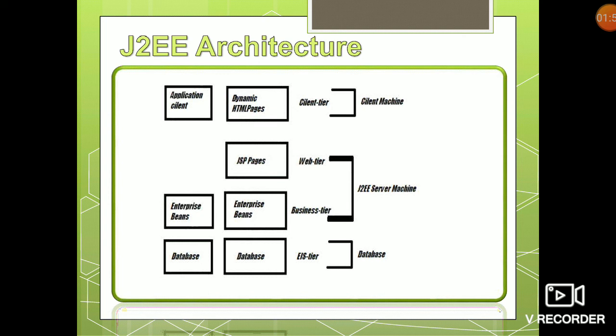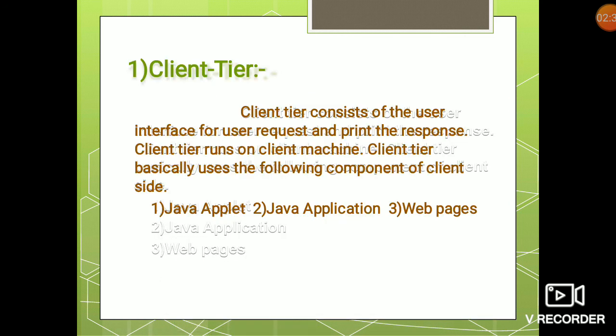This slide shows the J2EE architecture. The first part is the client tier or client machine, the second is the J2EE server tier or server machine, and the third is the database tier. As you can see in the diagram, the client tier consists of application clients and dynamic HTML pages. The server tier consists of JSP pages, servlet pages, EJB (Enterprise Java Beans), JavaServer Faces, JavaMail, and other components. The third is the database tier, which holds the data.